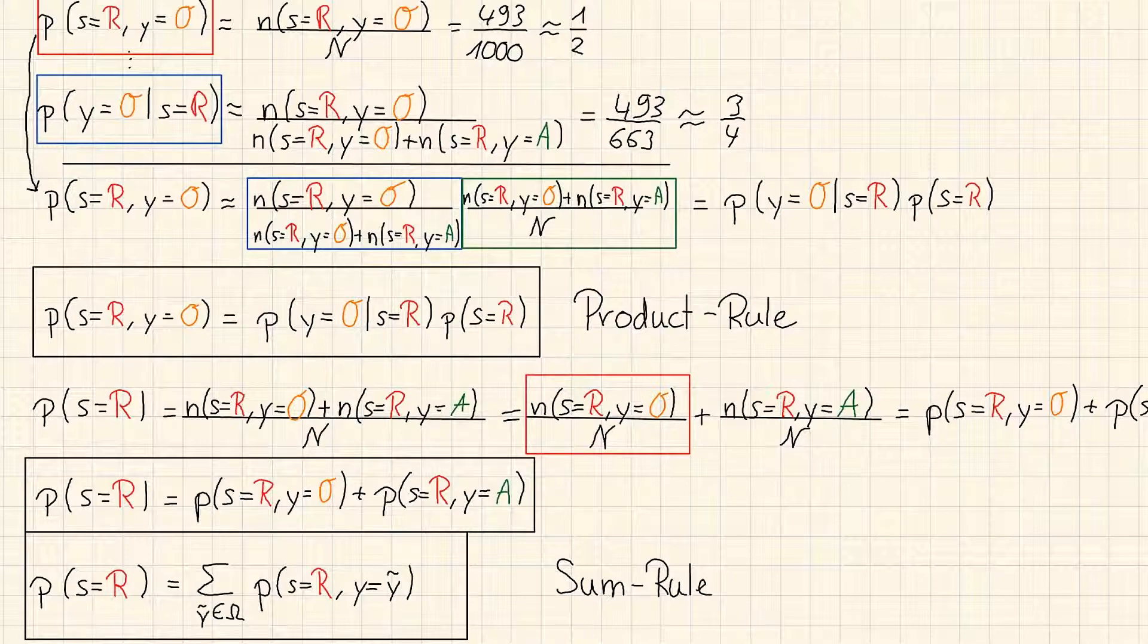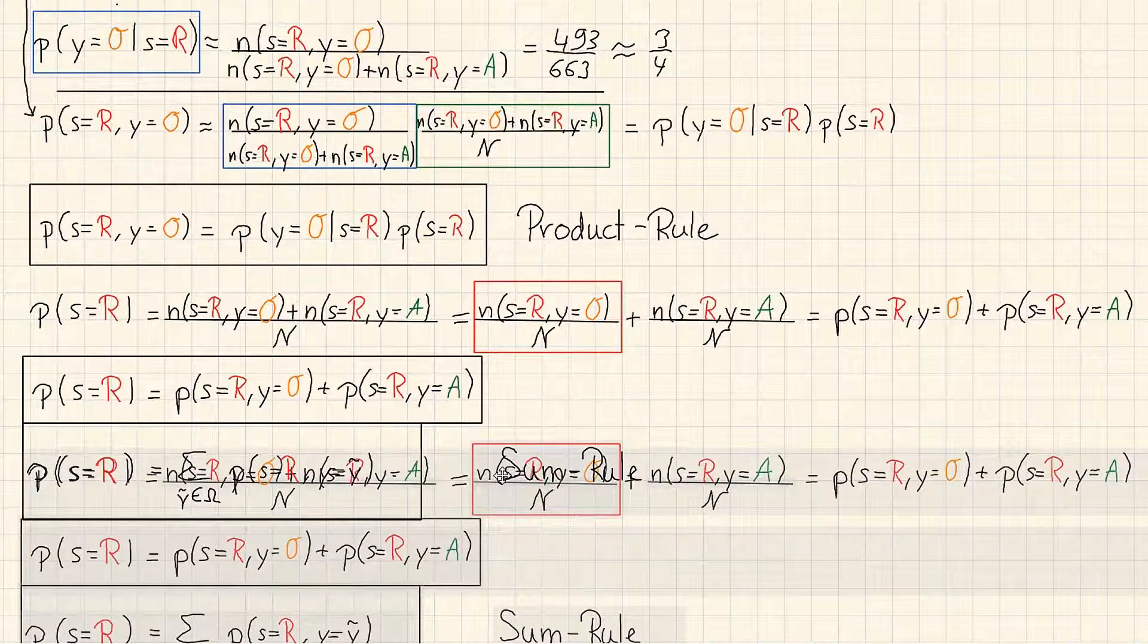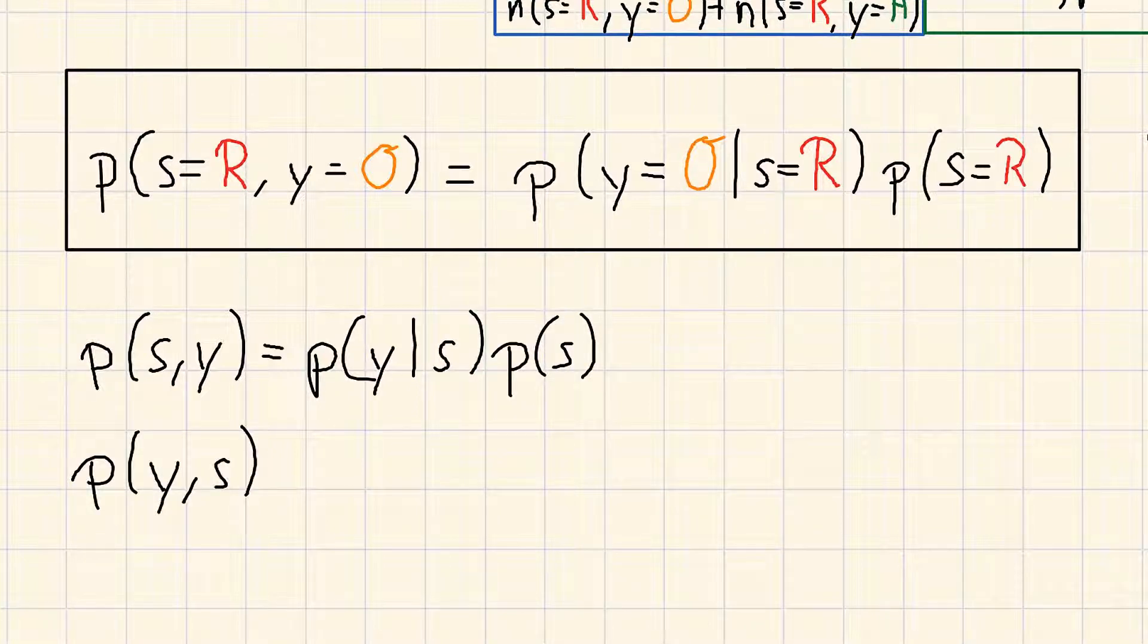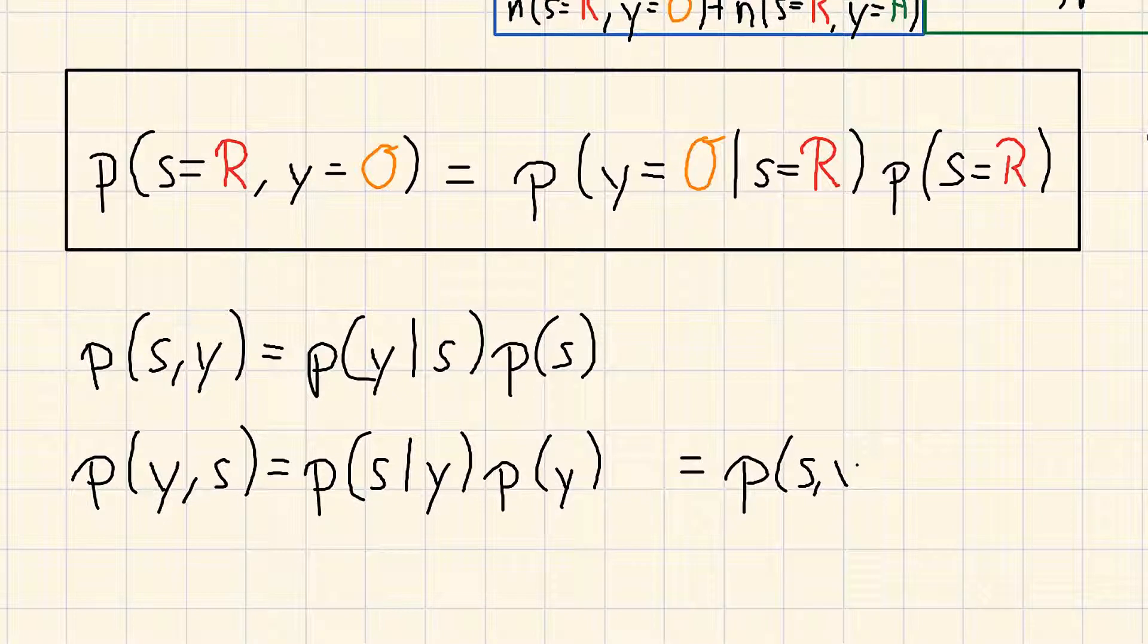So, if we have a look at our product rule again, it also applies if I say, let's consider p of s and y is also equal to p of y given s times p of s. It's also the same as p of y and s is equal to p of s given y times p of y.